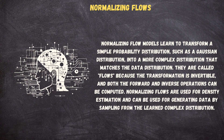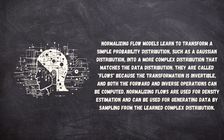Normalizing flow models learn to transform a simple probability distribution, such as a Gaussian distribution, into a more complex distribution that matches the data distribution. They are called flows because the transformation is invertible, and both the forward and inverse operations can be computed. Normalizing flows are used for density estimation and can also be used for generating data by sampling from the learned complex distribution.